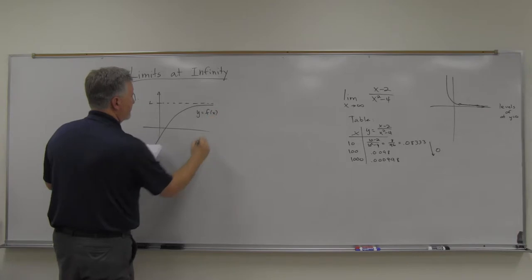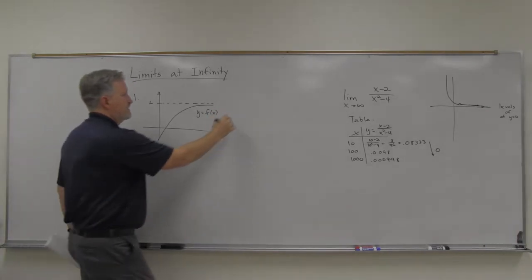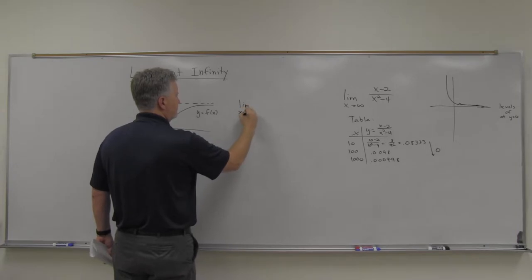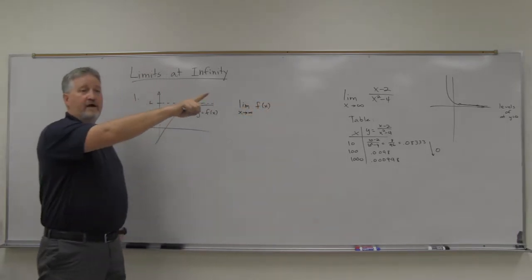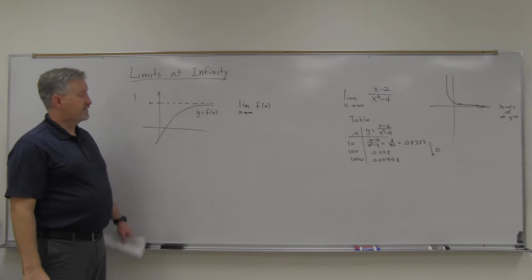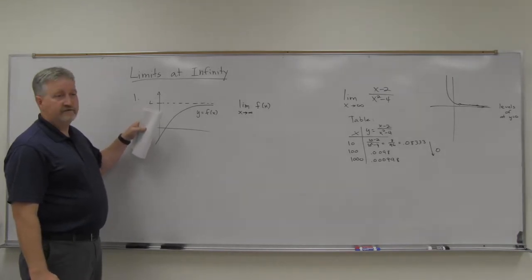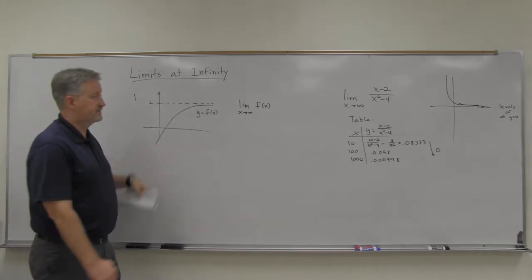So this is y equals f of x. Yeah, so what I'm looking at, when I'm talking about the limit as x goes to infinity of f of x, I'm looking at what happens on the graph on the far right. And in this case, the limit as x goes to infinity on the far right, it levels off at L, doesn't it?